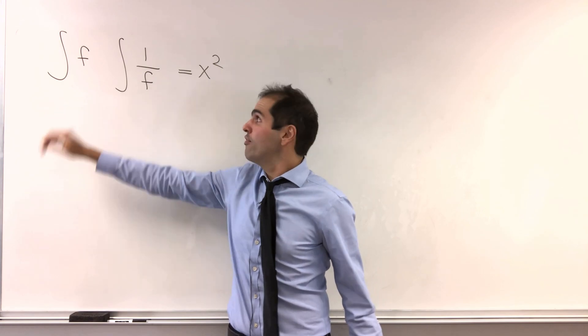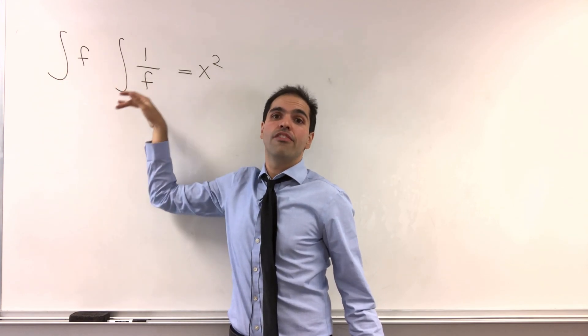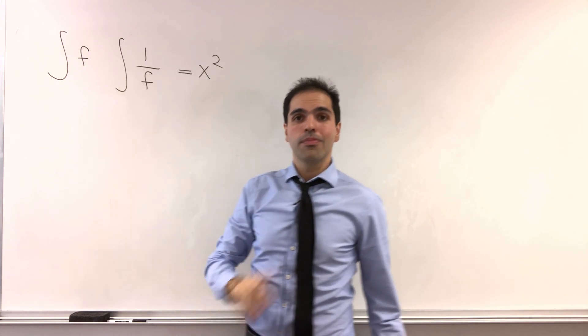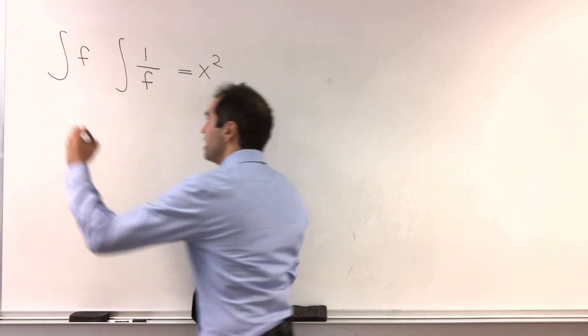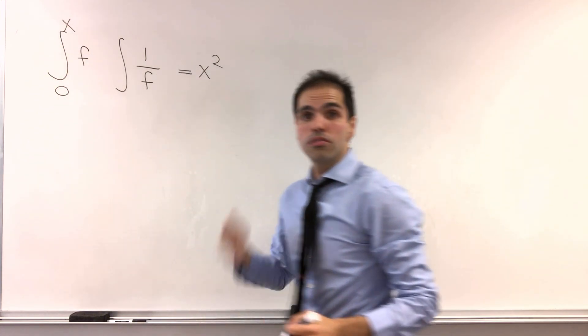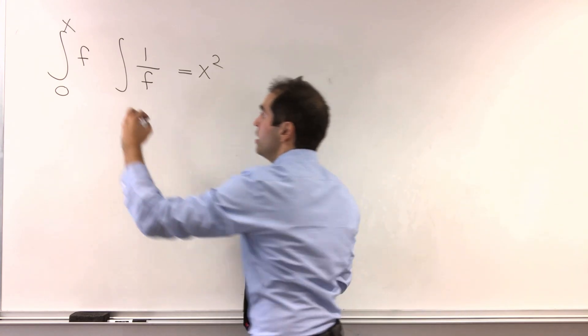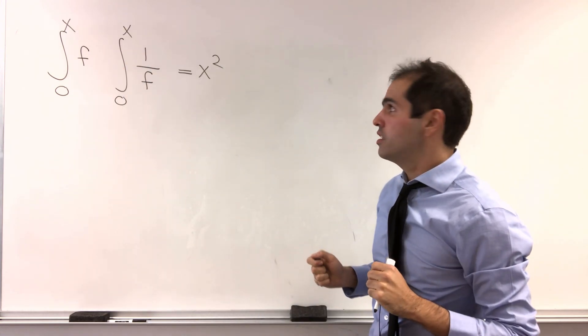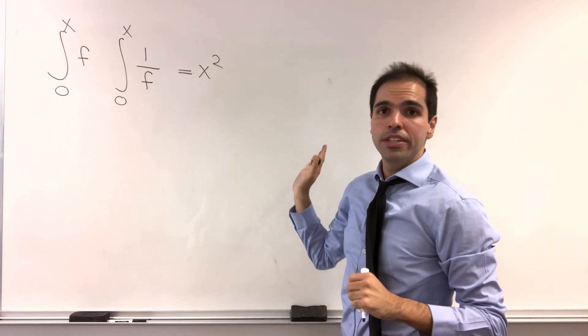Are there functions f such that the integral of f times the integral of 1 over f equals x squared? Let me be a little bit more precise. By the integral here, I mean the integral from 0 to x, f of t dt, and here integral from 0 to x, 1 over f of t dt, and we want this to be equal to x squared.